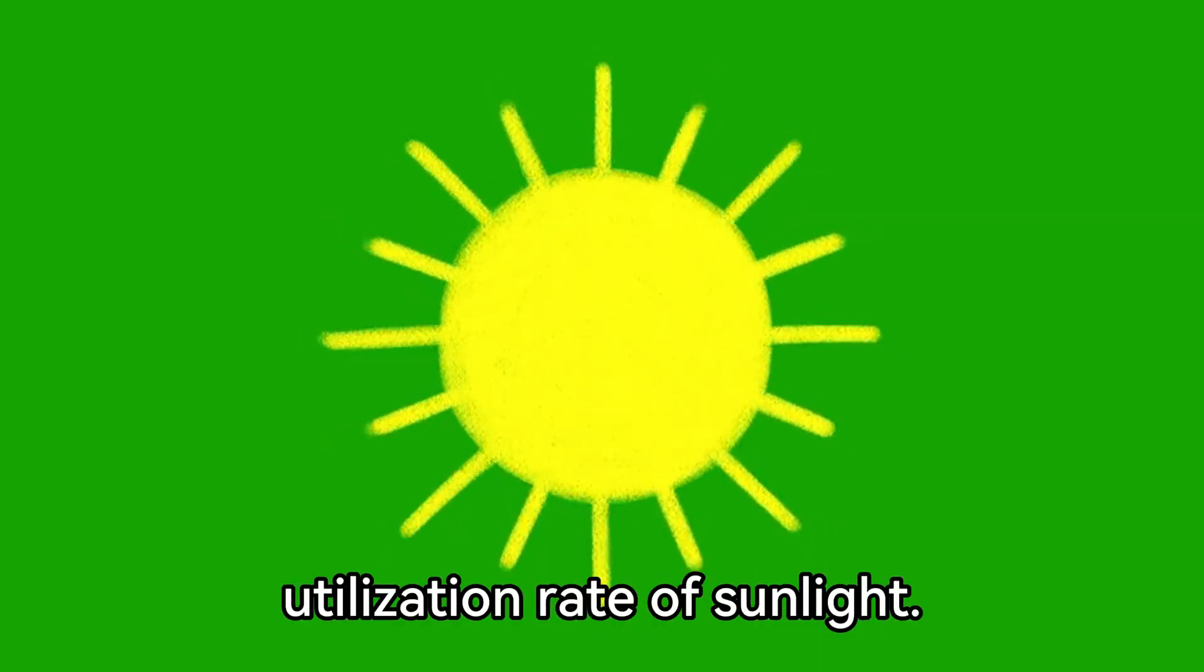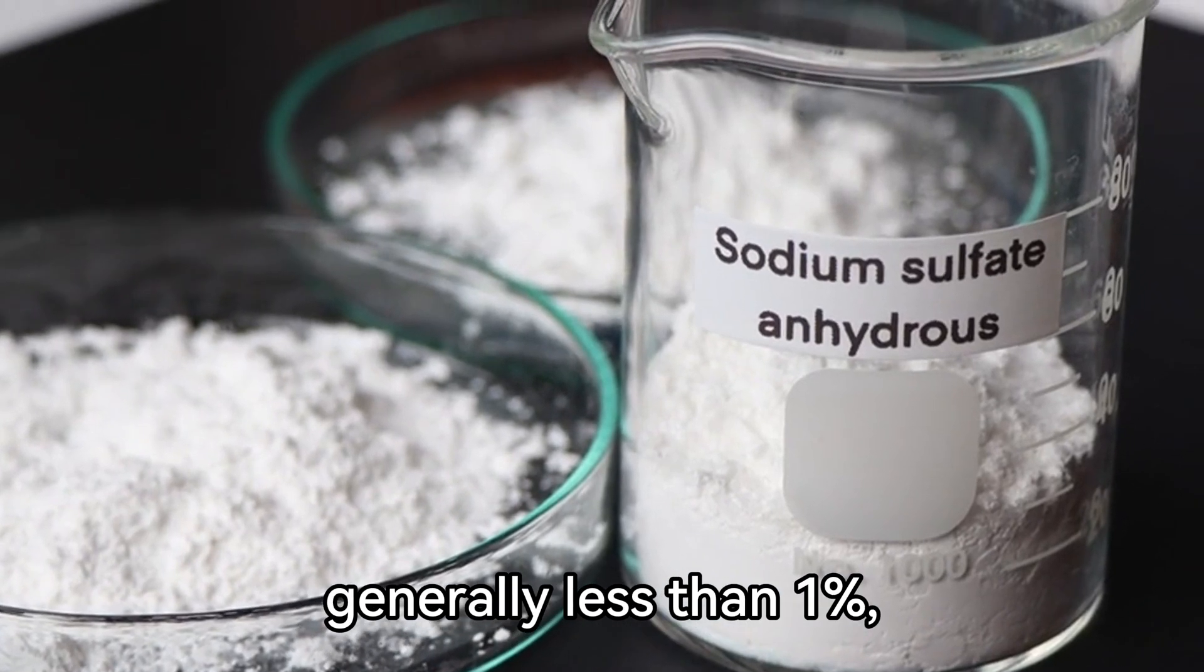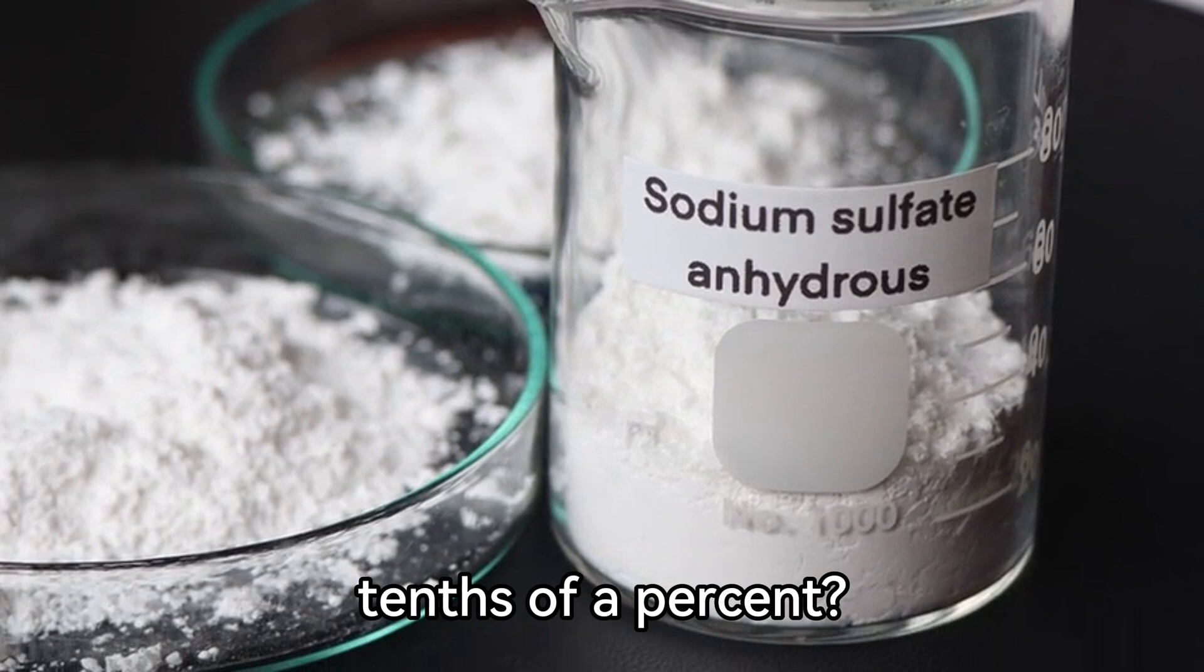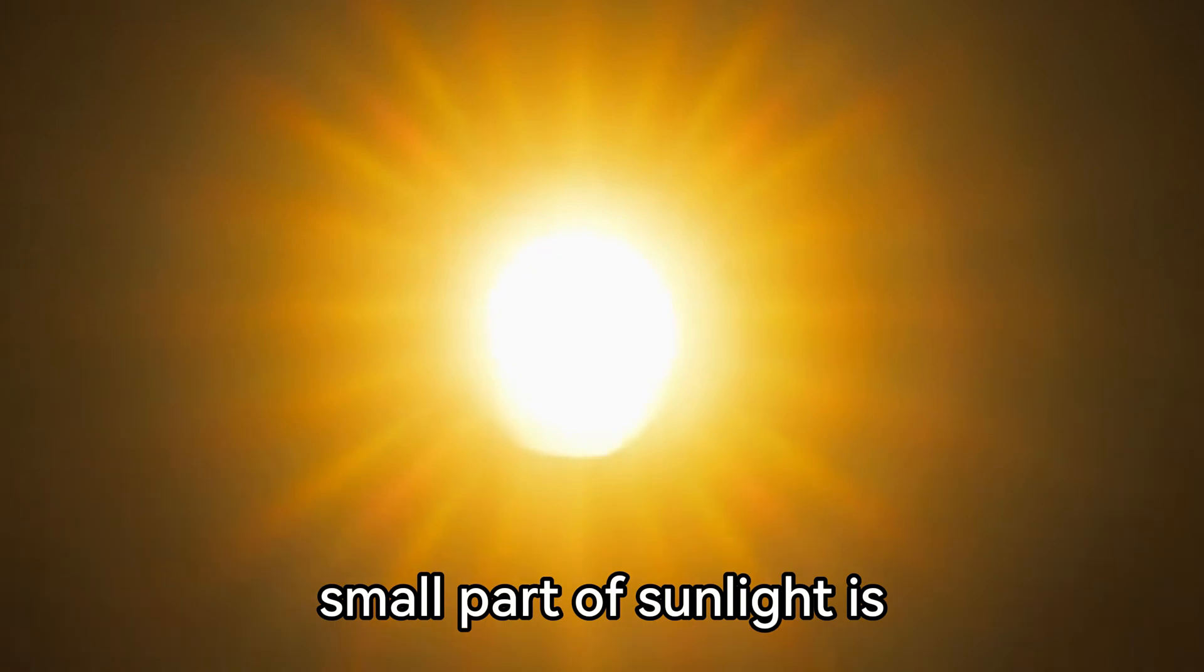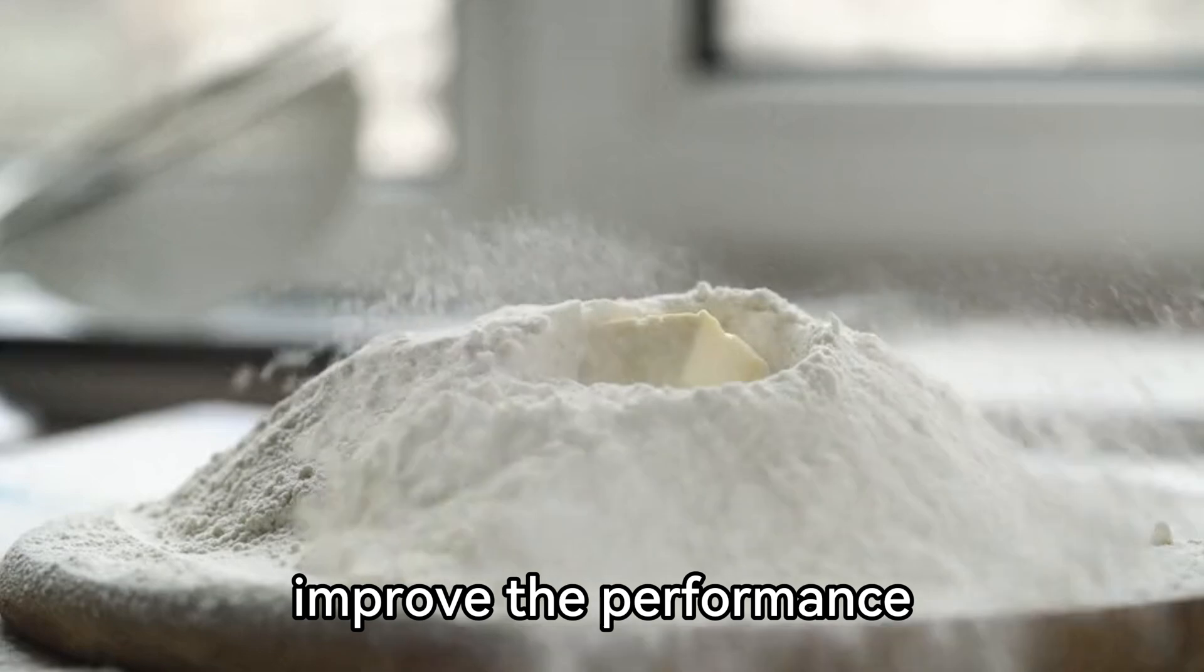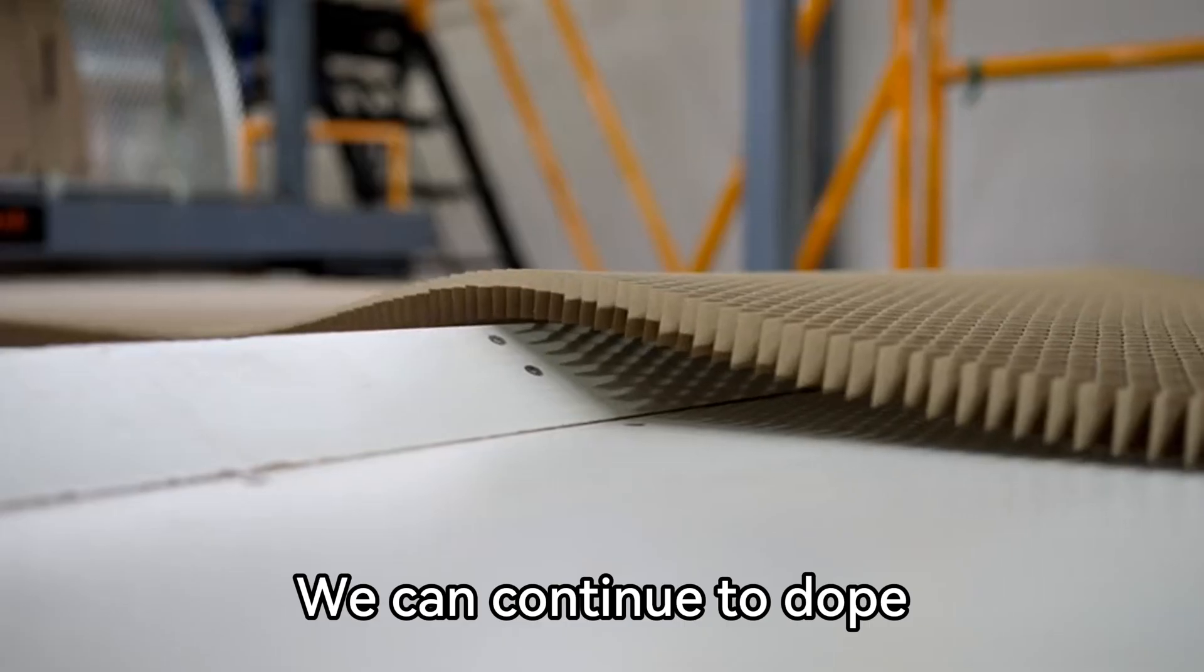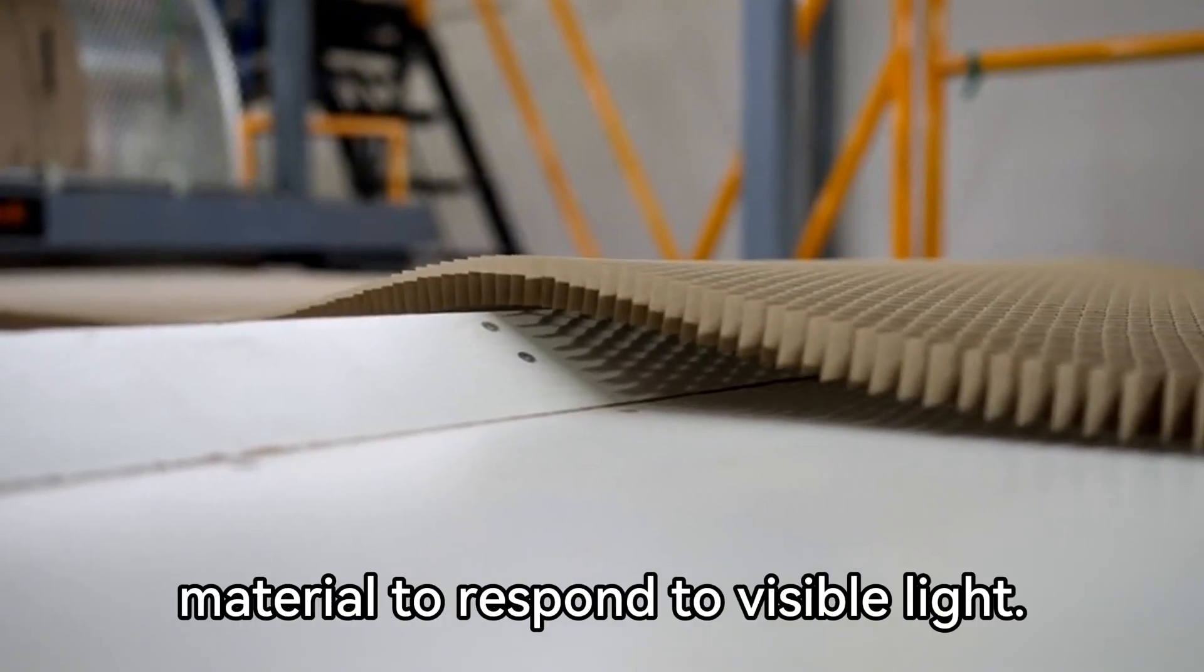The second is the utilization rate of sunlight. Why is the STH of the titanium dioxide system generally less than 1%, usually only a few tenths of a percent? This is because it only responds to the ultraviolet band, which accounts for only about 5% of the solar spectrum. This means that only a small part of sunlight is actually utilized. If visible light can be further absorbed, the STH will obviously increase directly.